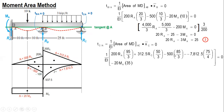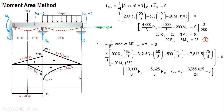Rearranging and combining constants, then multiplying the equation by 24/25 to simplify the numerator, multiplying all terms by this factor gives us equation number four.